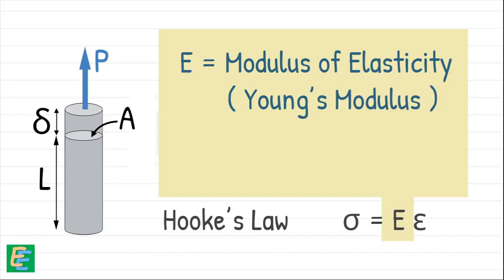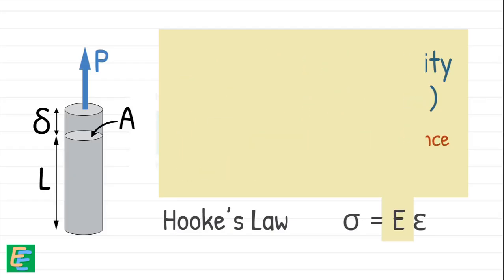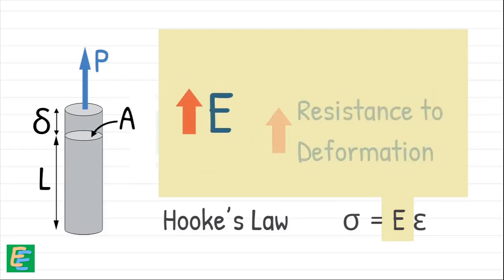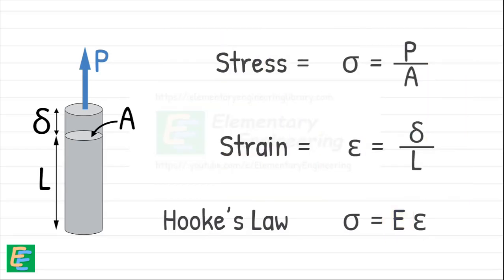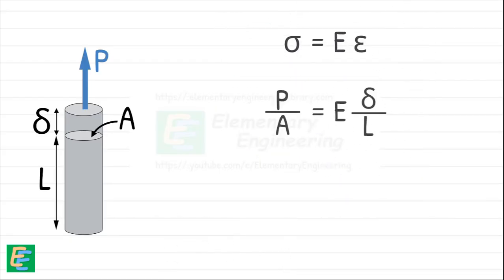It is a property of the material that tells us how strongly it resists being stretched or compressed. Higher the Young's modulus, more resistant it is to deformation. Now we already have expression for sigma and epsilon. Let's substitute them into Hooke's law. Solving this, we get the value of delta. That's our formula.